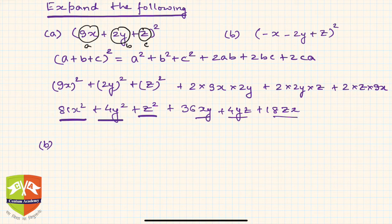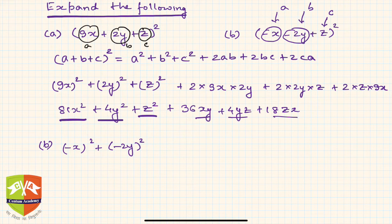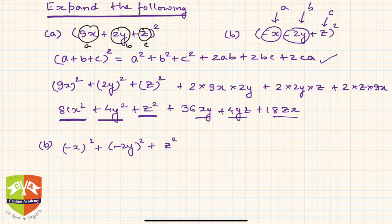Now the second question. Here there is one catch — there is −x and −2y. So I will treat −x as a, −2y as b, and z as c. We don't need to remember a different formula for different sign varieties; just replace +a by −a, +b by −b, and +c by −c as needed. Only one formula suffices for all.